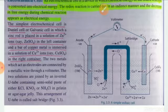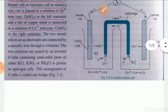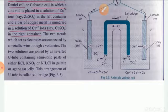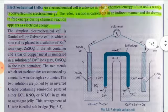The two electrochemical solutions are joined by a device called a salt bridge. A salt bridge is an inverted U-shaped structure containing a semi-solid paste of either potassium chloride, potassium nitrate, or ammonium chloride in gelatin or agar-agar jelly, arranged in a U-tube.